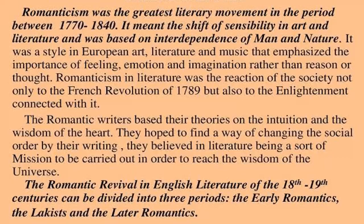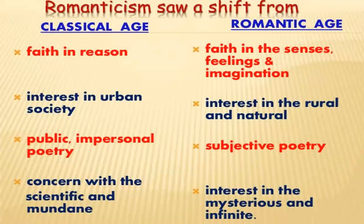The English Romantic period ended with the coronation of Queen Victoria in 1837. The major English poets are William Wordsworth, Coleridge, Byron, Shelley, Keats, and so on. In America, we have Emerson, Nathaniel Hawthorne, Edgar Allan Poe, Henry David Thoreau, Herman Melville, and Walt Whitman. They are all Romantic writers.